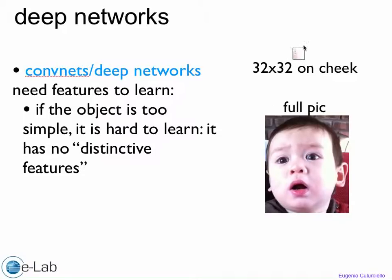You have to keep remembering about this in looking at your training set. If in your training set you see things that don't have a lot of features or they're hard to recognize even by a human, they might be hard to recognize even by a deep network. If the object is too simple, it is hard to learn.